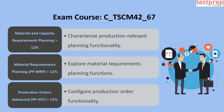Domain 1 is Material and Capacity Requirements Planning, comprising more than 12 percent of the exam, covering production-relevant planning functionality. Domain 2 is Material Requirements Planning PP-MRP, also more than 12 percent, exploring MRP functions. Domain 3 is Production Orders Advanced PP-SFC, more than 12 percent, covering configuration of production order functionality.